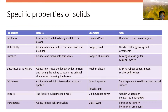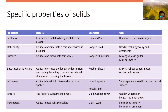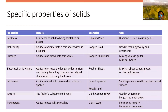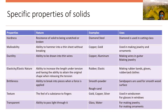Next is ductility. The nature of ductility is the ability to be drawn into thin wires. Examples are copper and aluminum. Uses include making wires, guitar strings, and jewelry.